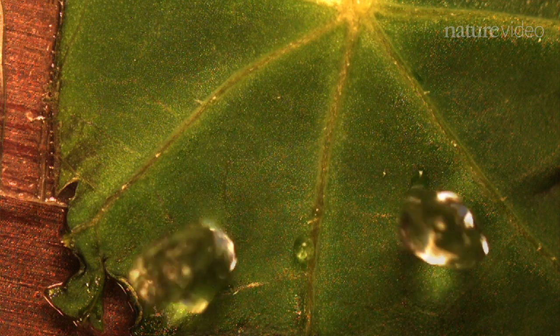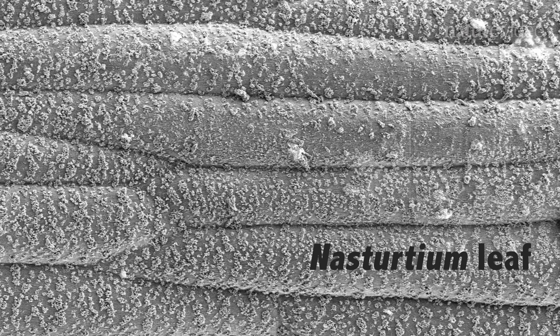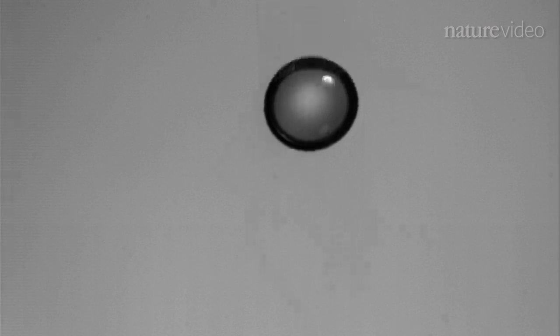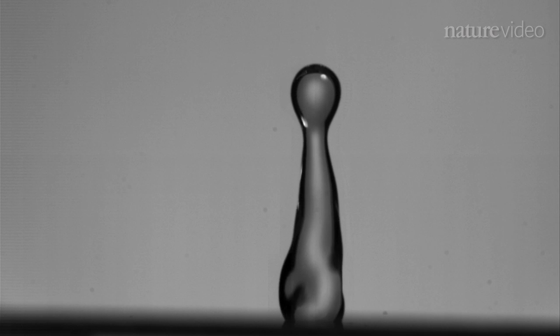All kinds of microscopic textures trap air at the surface of materials, stopping water molecules from interacting with them and keeping plants and animals from getting wet. Because droplets of water can't stick to these super waterproof surfaces, they stretch out, recoil, and bounce right off.